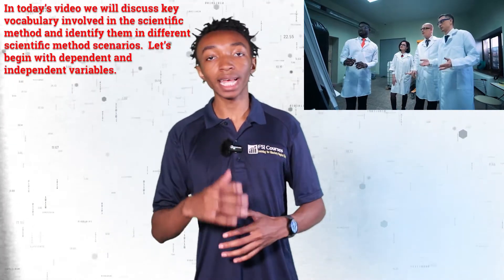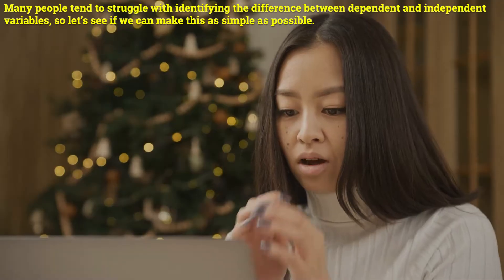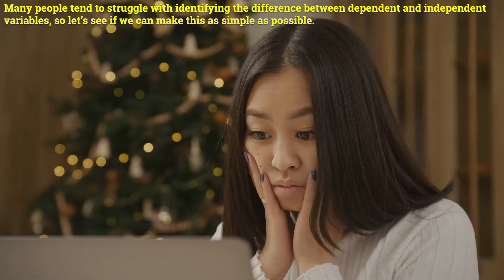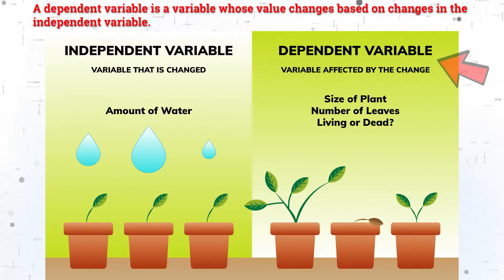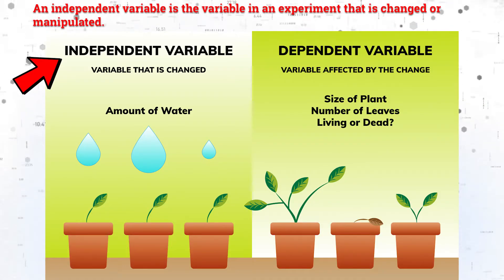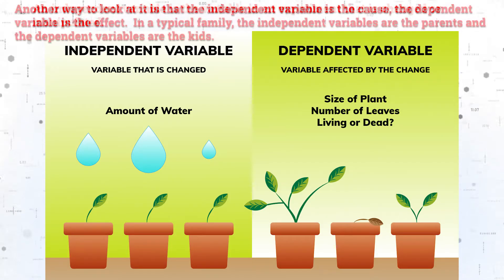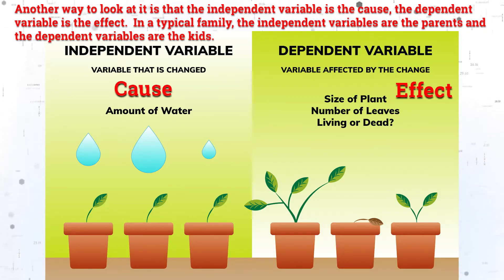Let's begin with dependent and independent variables. Many people tend to struggle with identifying the differences between dependent and independent variables, so let's make this as simple as possible. A dependent variable is a variable whose value changes based on changes in the independent variable. An independent variable is the variable in an experiment that is changed or manipulated. Another way to look at it is that the independent variable is the cause, and the dependent variable is the effect.